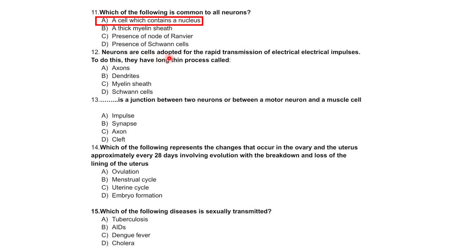Neurons are cells adapted for the rapid transmission of electrical impulses. To do this they have long thin processes called axons, dendrites, myelin sheath, and Schwann's cells.